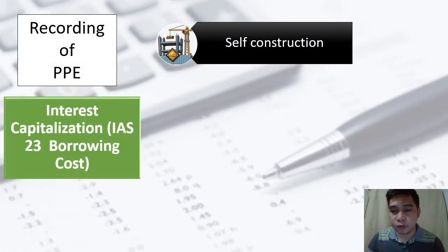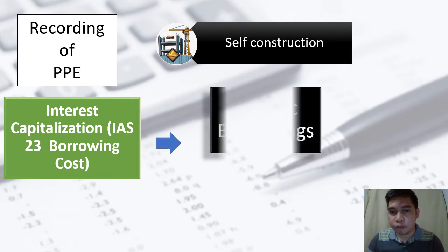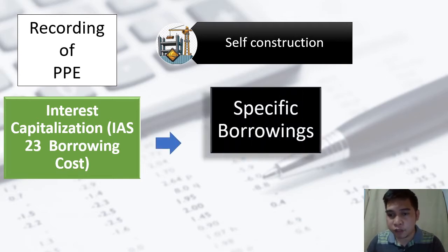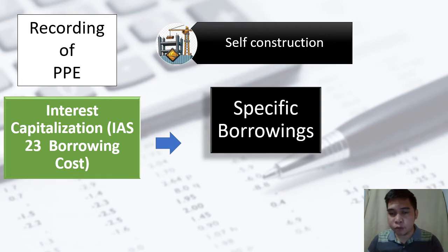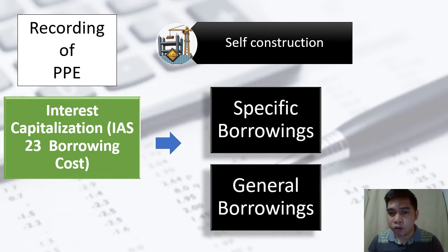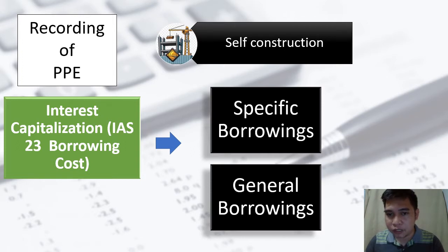Before the accounting treatment, let's first identify why we borrowed from the bank. We have two types of borrowings. Number one: specific borrowings — did we borrow from the bank specifically for the construction of this asset? If yes, then it is considered a specific borrowing. For example, borrowing to construct a building. Number two: if you borrowed from the bank but the money has many uses aside from the construction of the asset, it is considered a general borrowing. Each type has its own accounting treatment, so it is crucial to identify which type applies.